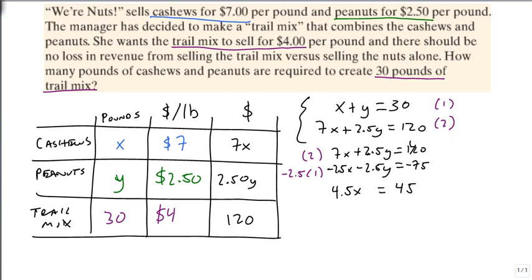So 7x minus 2.5x is 4.5x, and that's going to be equal to 120 minus 75 is 45. And we divide 4.5 into 45. We end up with x is 10, so that means we need 10 pounds of cashews.